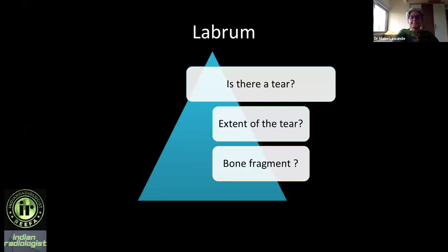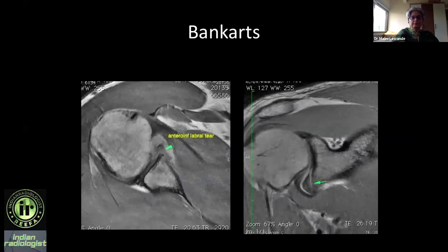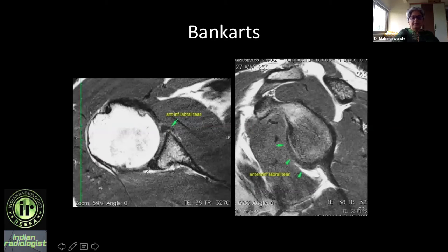That's what the surgeon wants to know. Starting with the labrum: is there a tear, what is the extent of the tear, how big is it, and is there any associated bone fragment? You can clearly see an anterior inferior labral tear here; this is the intact posterior labrum. This is a Bankart lesion in a patient who has had anterior dislocation.